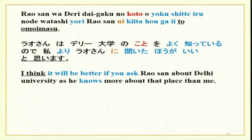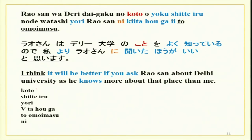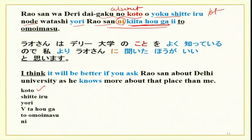There is a sentence using koto with many forms. Rao-san wa Delhi-daigaku no koto wo yoku shite iru no de, watashi yori Rao-san ni kiita houga ii to omoimasu. Koto is used — daigaku no koto means 'about Delhi university.' Yoku shiteru means 'knows a lot.' No de means 'because he knows a lot.' Watashi yori means 'more than me.' Rao-san ni kiita houga ii — it is better that you ask Rao-san. I think it is better you ask Rao-san more than me, as he knows a lot about Delhi University. Make sentences at home using these forms and practice with your partner — this is your homework.